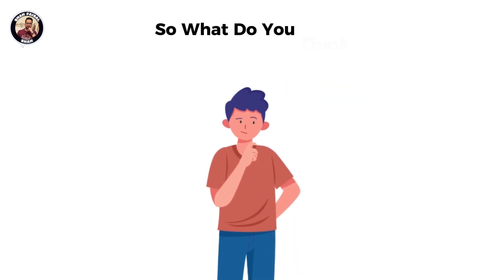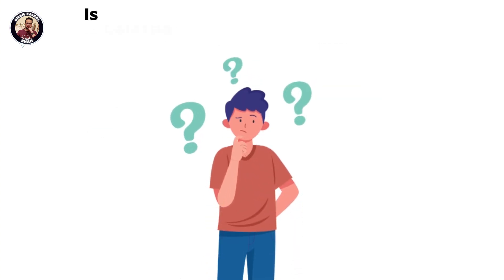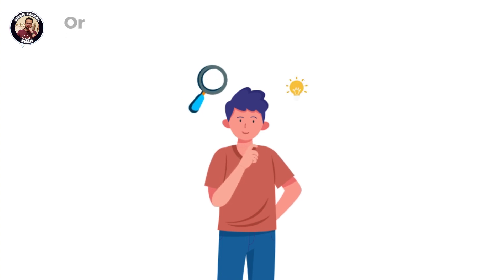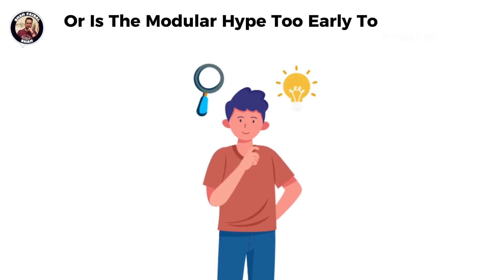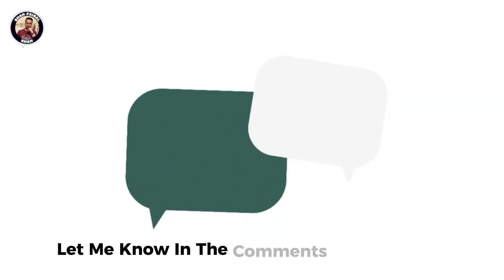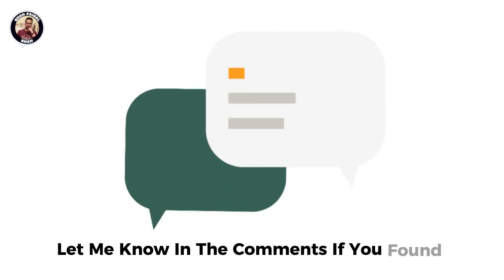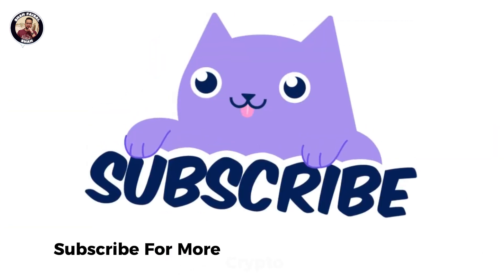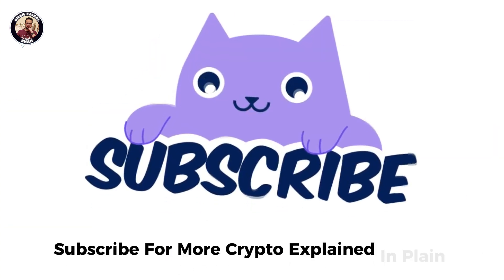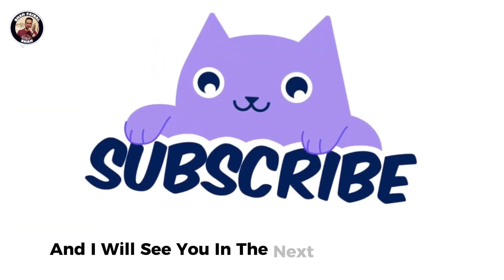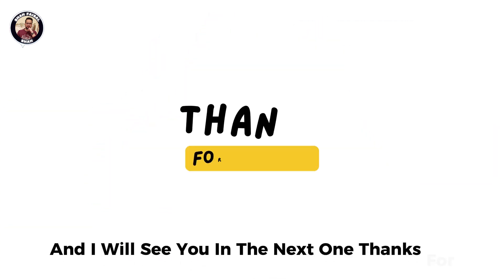So, what do you think? Is Celestia the missing piece of Web3 infrastructure? Or is the modular hype too early to matter? Let me know in the comments. If you found this helpful, hit the like button and subscribe for more crypto explained in plain English. Thanks for watching.